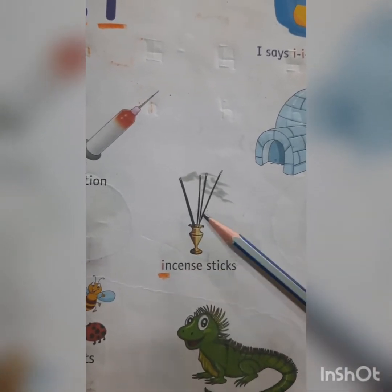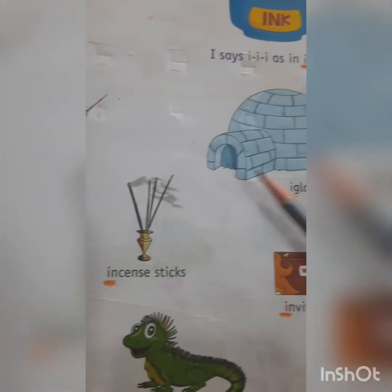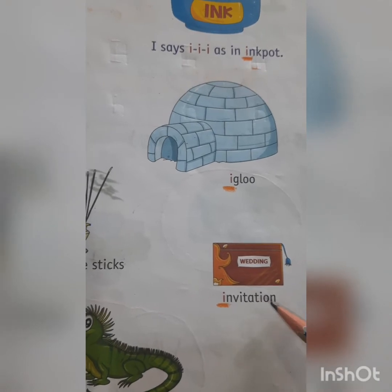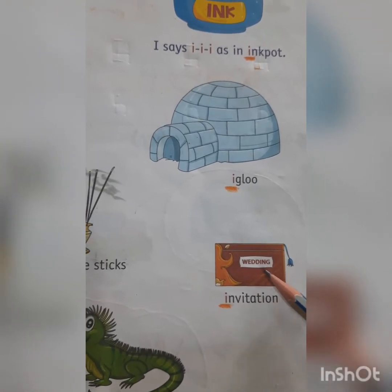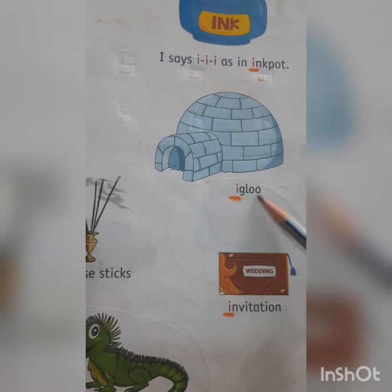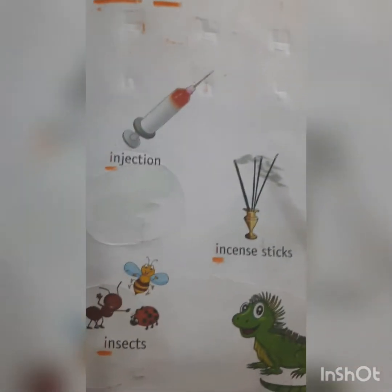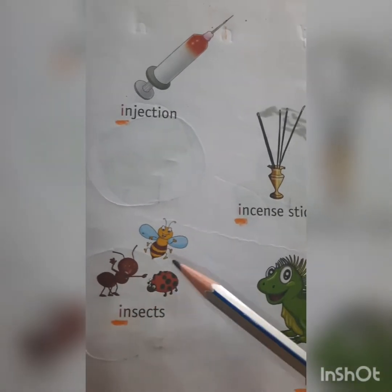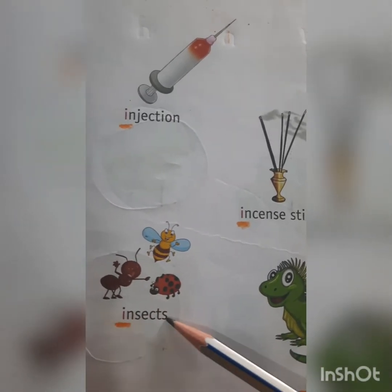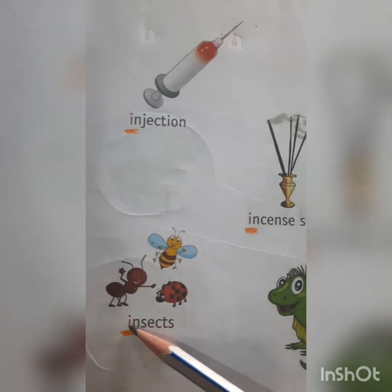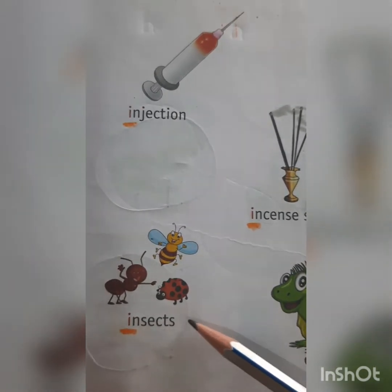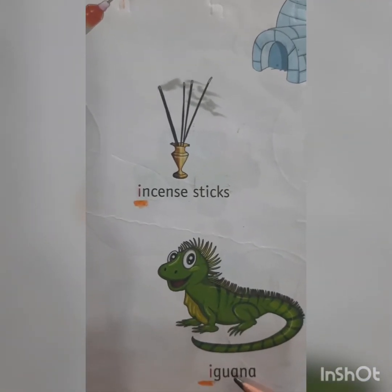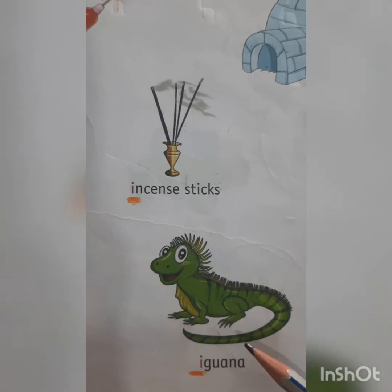Recognize the letters and say the name of the picture. I-N-V-I-T-A-T-I-O-N. Invitation. I-G-L-O-O. Igloo. Children you have to say the name of the picture. I-N-S-E-C-T-S. Insects. I-G-U-A-N-A. Iguana.